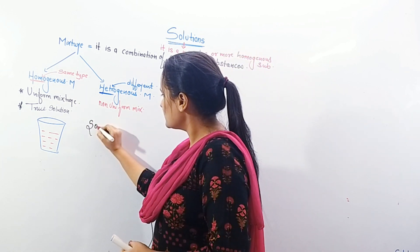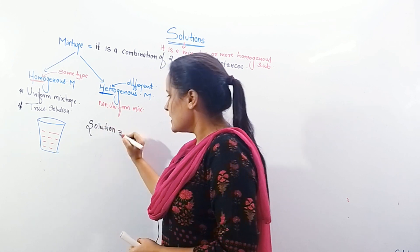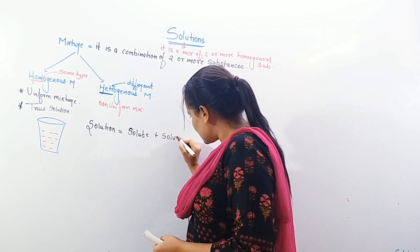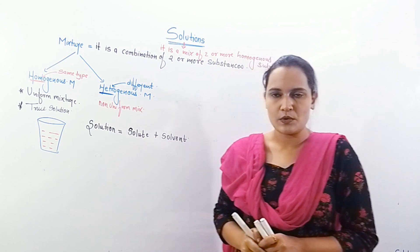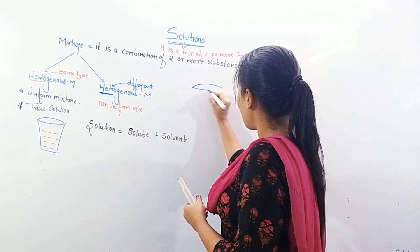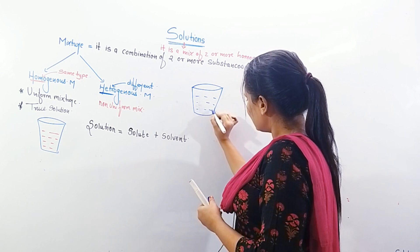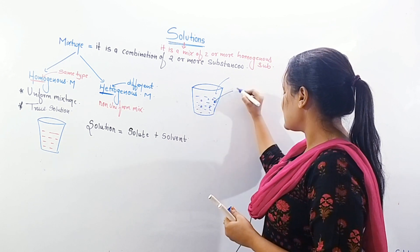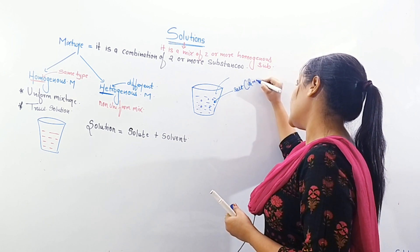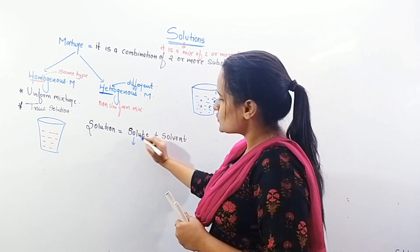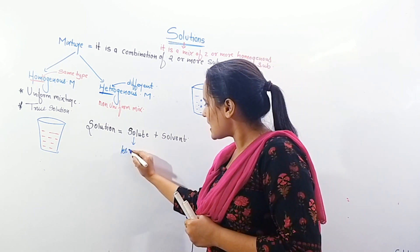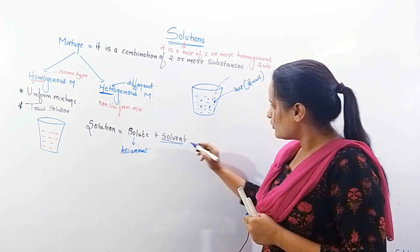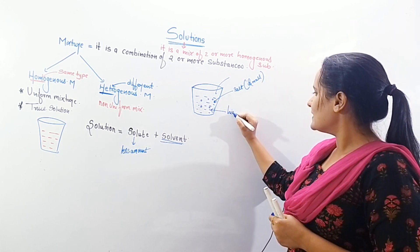A solution is made up of two things: solute and solvent. For example, if I take a glass of water and add some salt from outside, the salt added in small quantities is called the solute. Solute is always present in lesser amount.